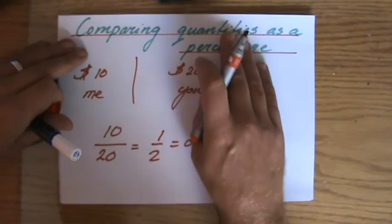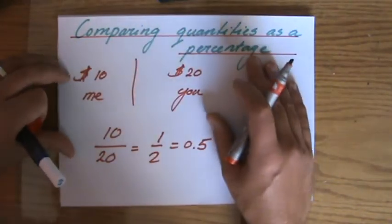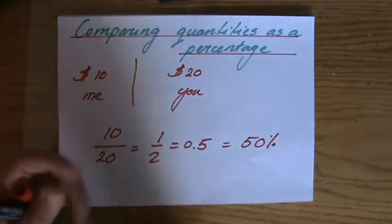I'm comparing two quantities. $10, $20, those are quantities, as a percentage. So I'm not going to say half or 0.5, I'm going to say 50%.